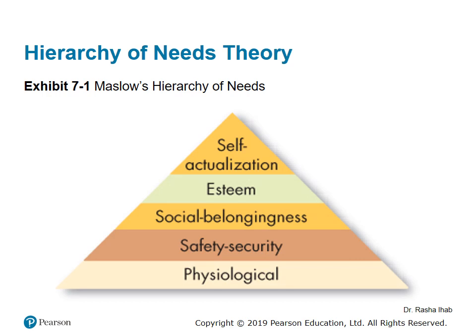Maslow put the needs of any person in hierarchy form. He stated that anyone has a hierarchy of needs. It starts with physiological needs. If you fulfill the physiological needs, you move to safety and security needs. If you fulfill those, you move to the next level — social belongingness. Then esteem needs, and finally at the top of the pyramid, self-actualization. Individuals cannot move to the next higher level until all needs at the current lower level are satisfied.